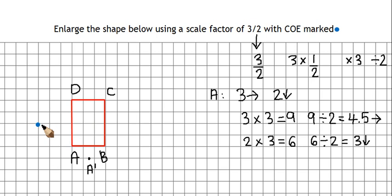So my new B is going to have to be 9 squares to the right, and then if it was 2 squares down, it's going to end up being 3 squares down. So 9 right, 3 down, takes us to there.